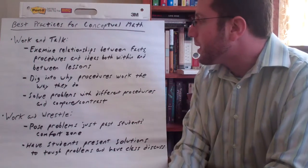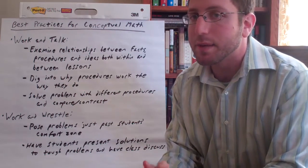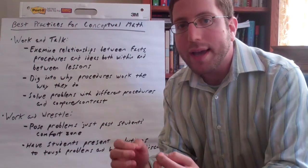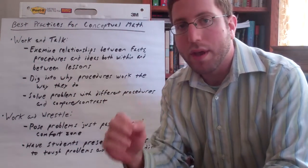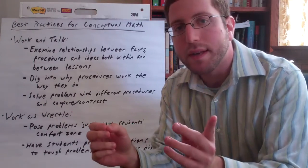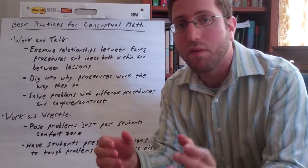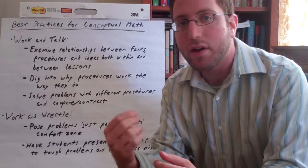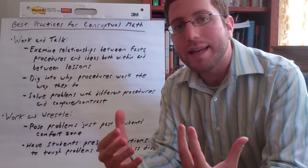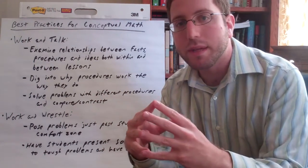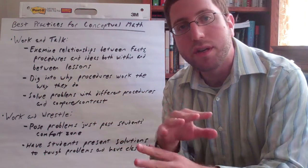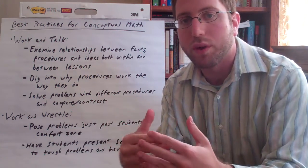The first strategy is to examine relationships between facts, procedures, and ideas, both within the lesson and between lessons. This means looking at why we're doing this particular thing with multiplication or word problems today, and how that connects to what we did yesterday or last week. How does finding the area or perimeter connect to ideas from when we were talking about patterns? Making the connections explicitly between ideas, procedures, and lessons helps students see the cohesive whole of what they're learning.